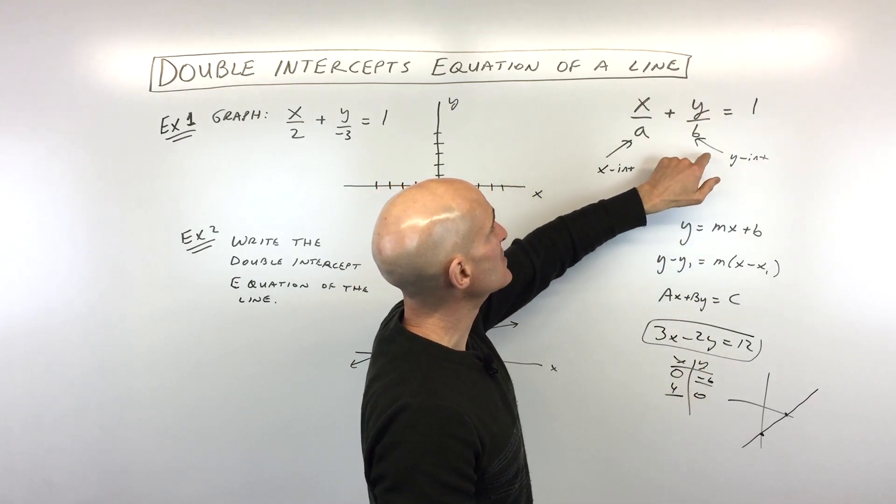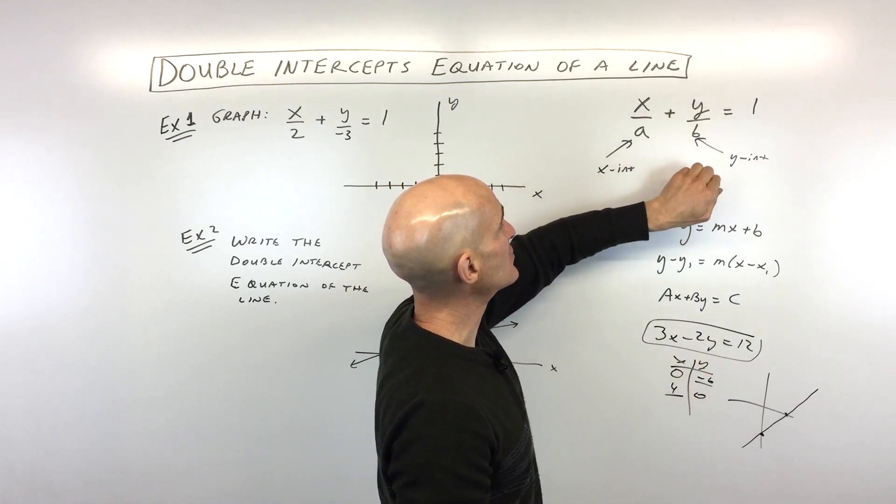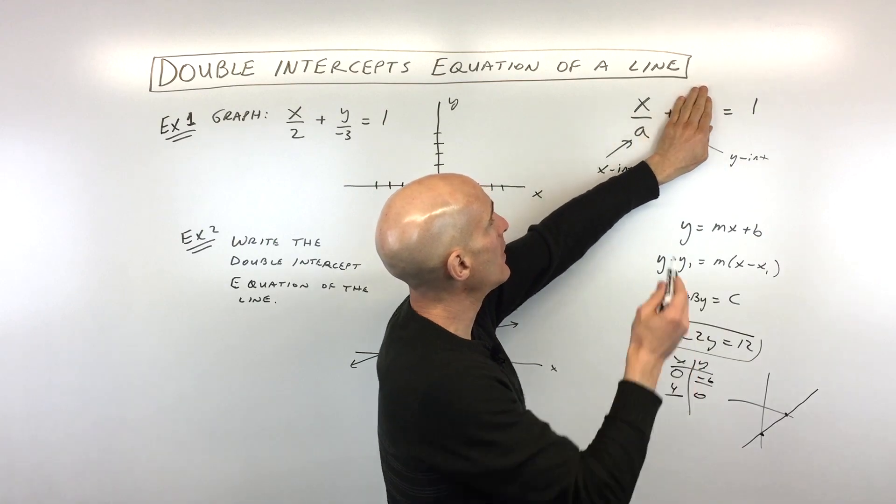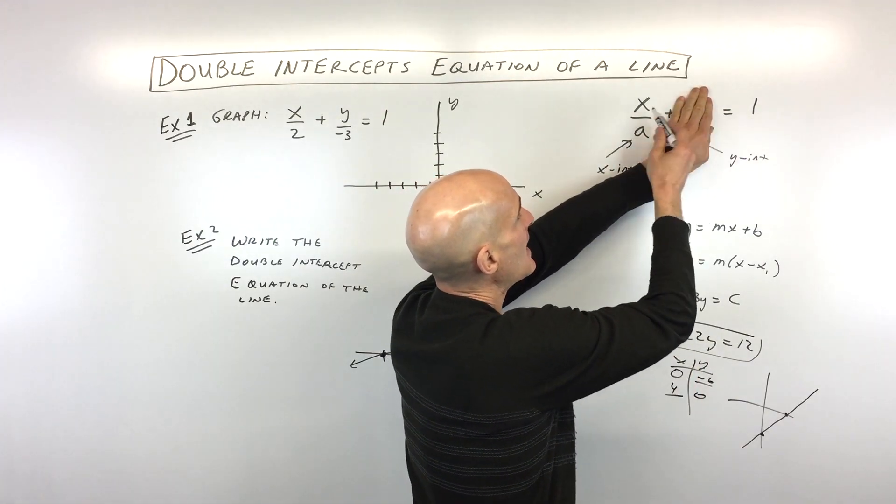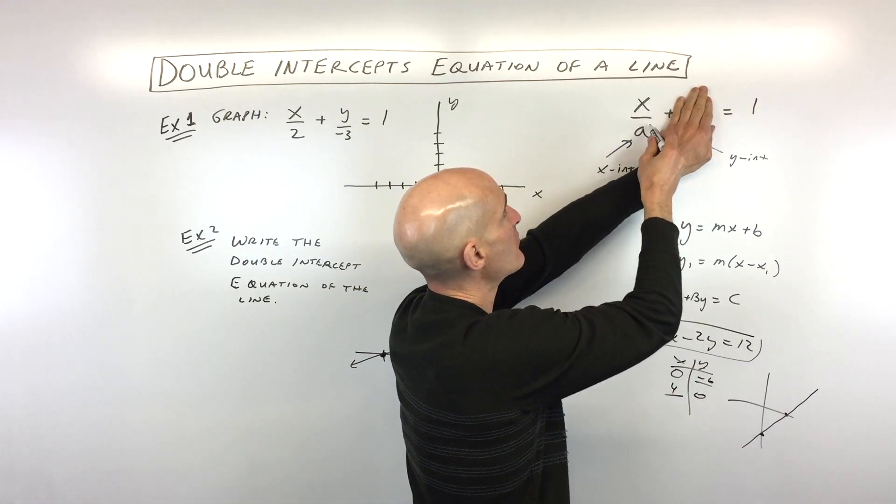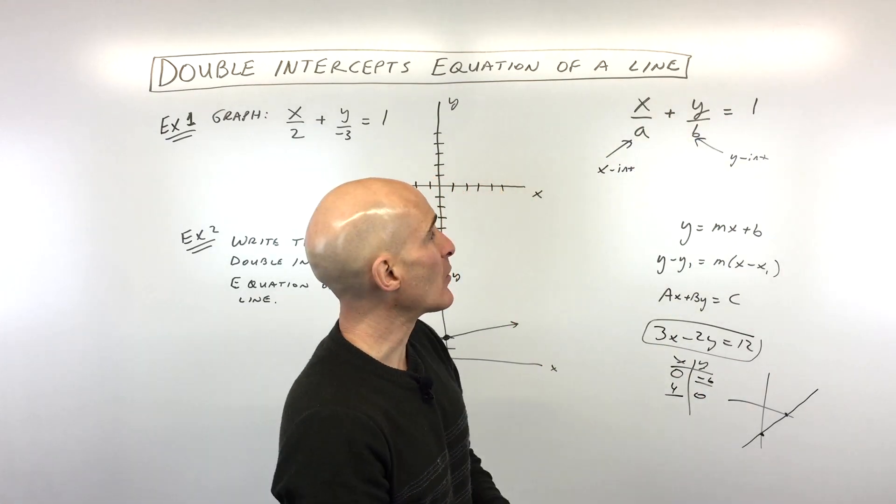Also, conversely, if we set y to 0, that's going to cancel this term out because 0 over b is 0. And then by multiplying both sides by a, we're getting x equals a. And again, remember, a is our x-intercept. So that's why it works.